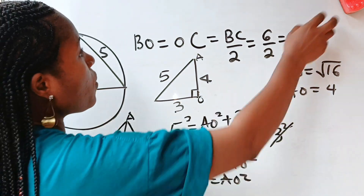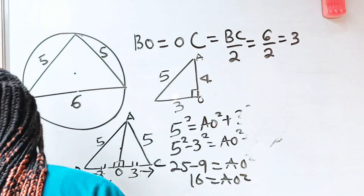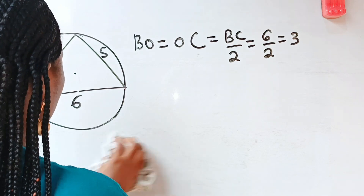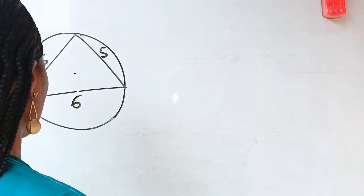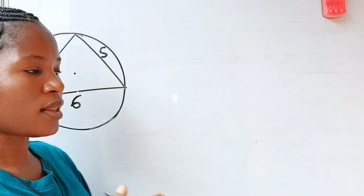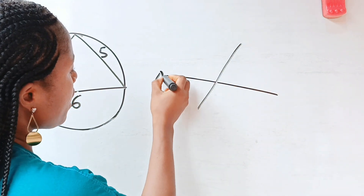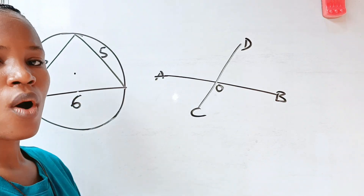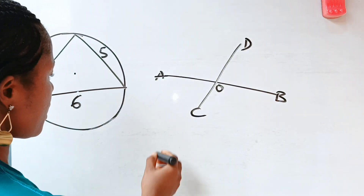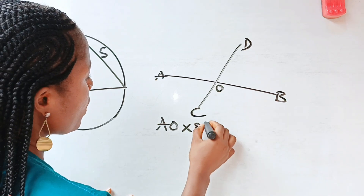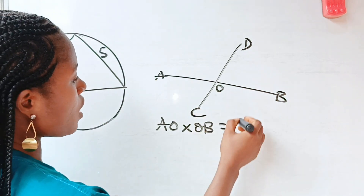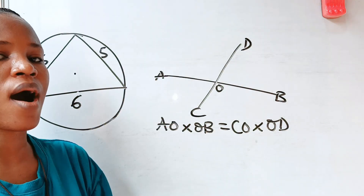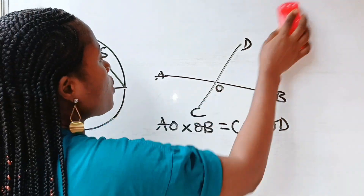Let me explain what the chord-chord power theorem is about. When two chords meet each other — call this chord AB and this chord CD, with O as their intersection point — the theorem states that AO times OB equals CO times OD.